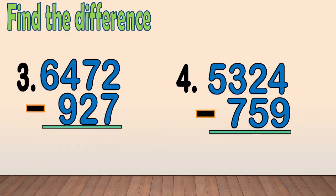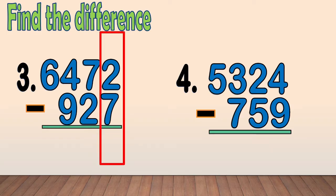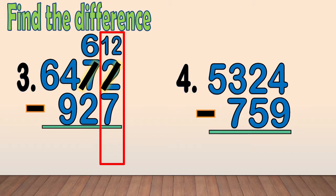Number 3: 6,472 minus 927. First, we subtract the ones: 2 minus 7. We cannot subtract 7 from 2, so we regroup 1 ten from 7. We have 12 ones. We cross out the 2 and write 12 as new ones. Now we only have 6 tens — we cross out the 7 and write 6 at the top. We subtract the ones: 12 minus 7 equals 5.